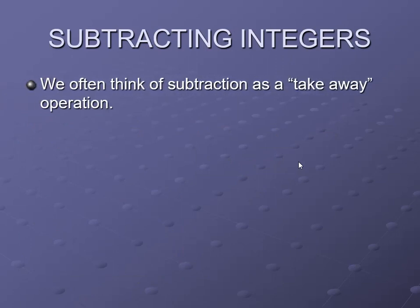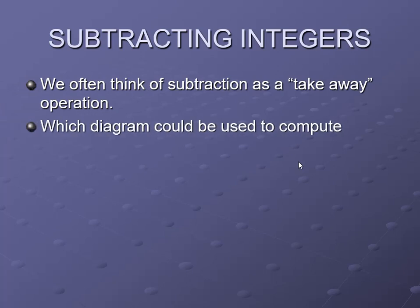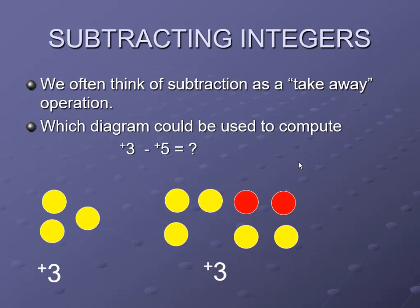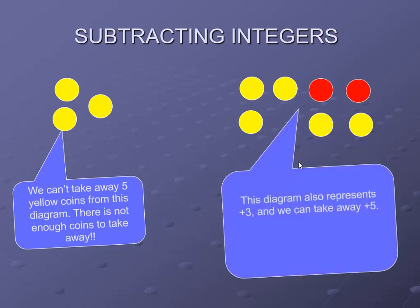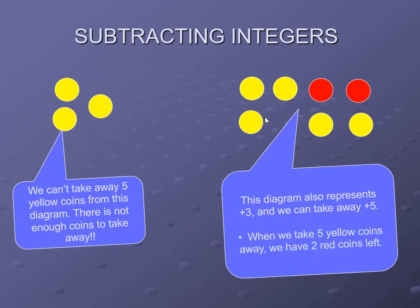Now let us do subtraction with this activity. We often think of subtraction as taking away. Which diagram can be used to compute the subtraction? This diagram also represents plus 3, and we need to take away plus 5. We add two pairs of zeros — each pair represents 0, so the result does not change. Then we take away five yellow coins and two red coins are left. The answer is minus 2.